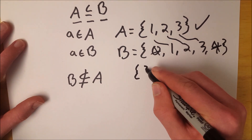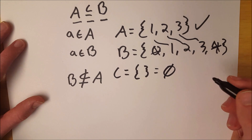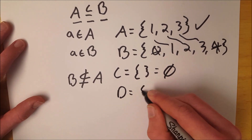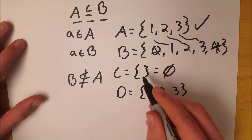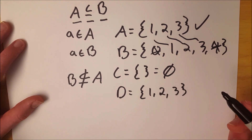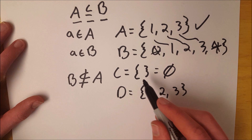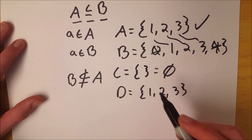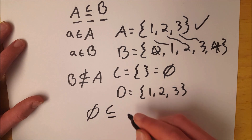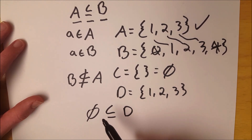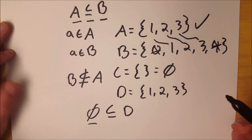Now let's look at a bit of a weird example. What if we have the empty set? Let's say C equals the empty set, which is also written this way if you prefer. And let's say the set D is the set containing 1, 2, and 3. Is C a subset of D? Well, the rule is: for any element in C, it must also be an element of D. For C to not be a subset of D, there must be an element in C that is not in D. Because the empty set has no elements, there is no element to disqualify it, which means the empty set is indeed a subset of D, and subsequently the empty set is a subset of every set, including itself.